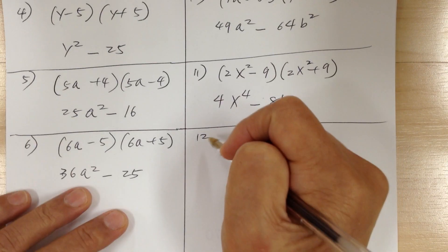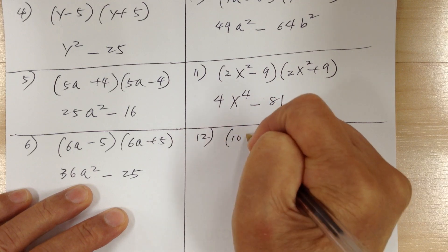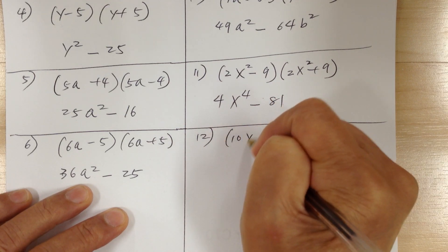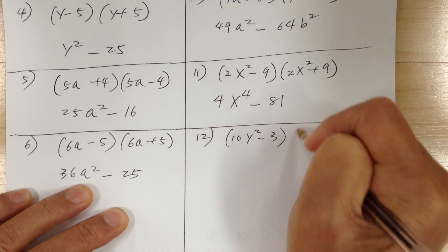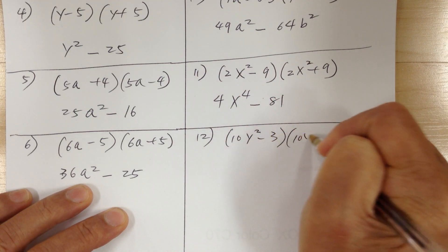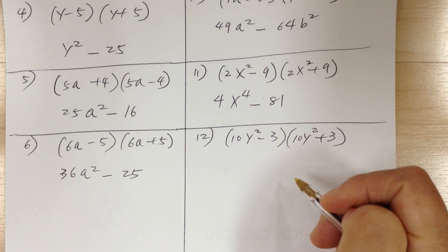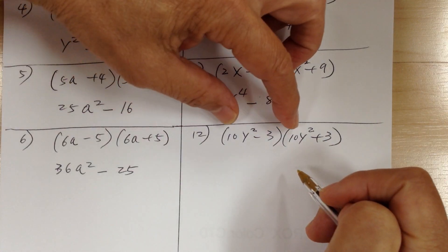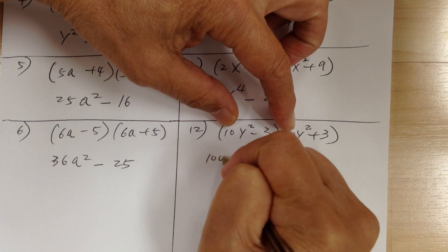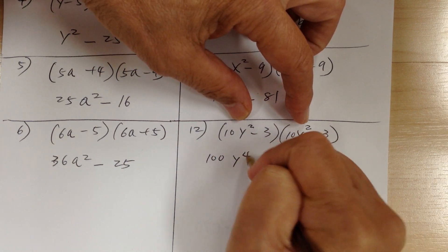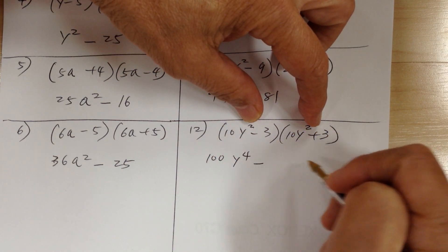Number 12: you have 10y squared minus 3 times 10y squared plus 3. Multiply, and you're going to get 100y to the 4th minus 9.